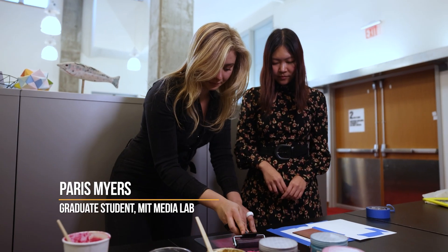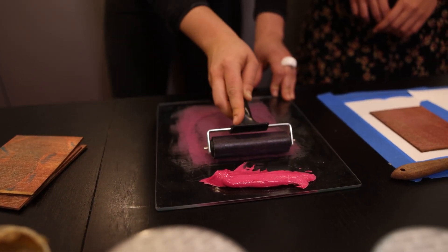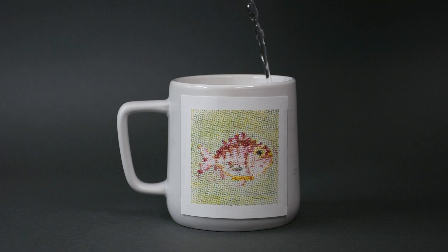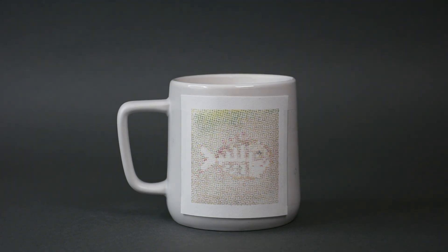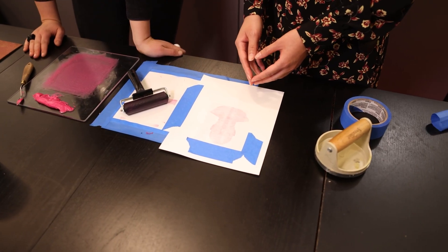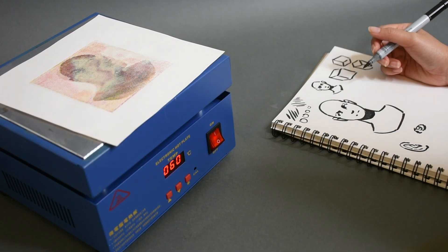There are thermochromic inks that go from clear to color at some activation temperature and inks that go from color to clear at the same activation temperature. By taking advantage of those materials with special properties and using both color-to-clear and clear-to-color CMYK thermochromic inks, we're able to create these images that shift into each other.